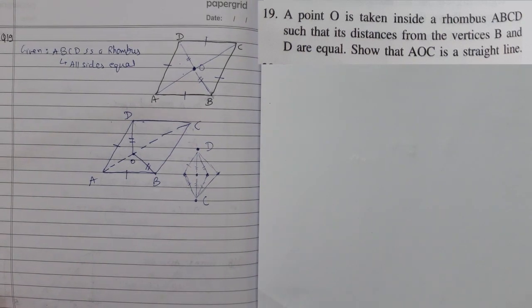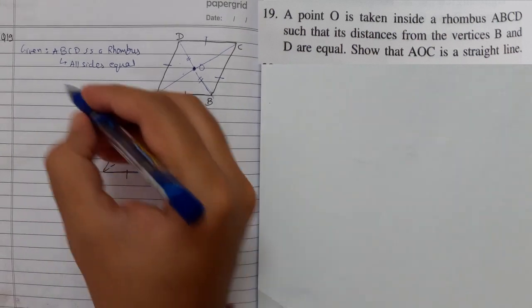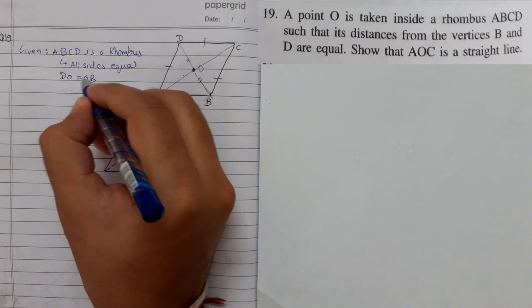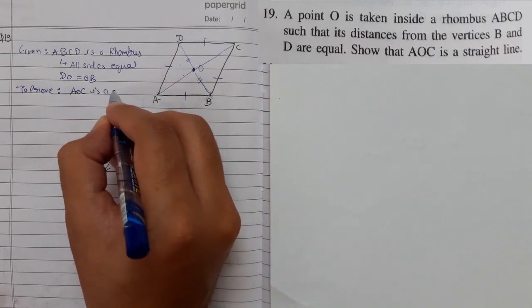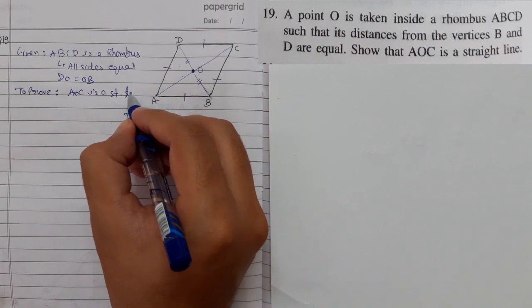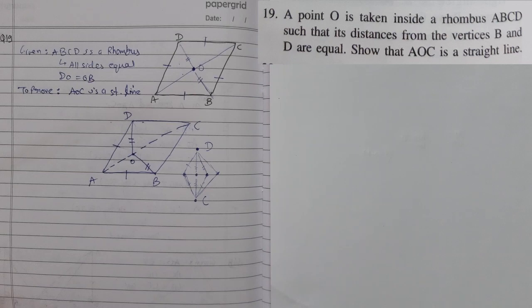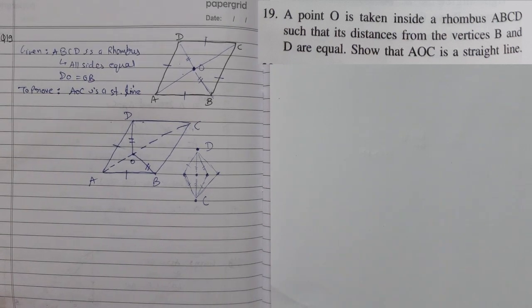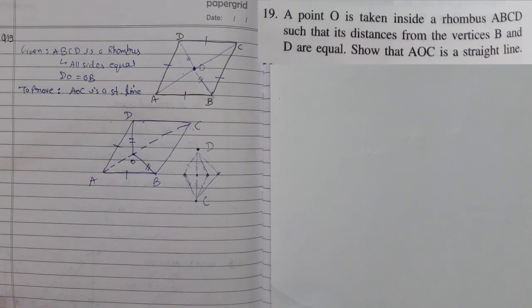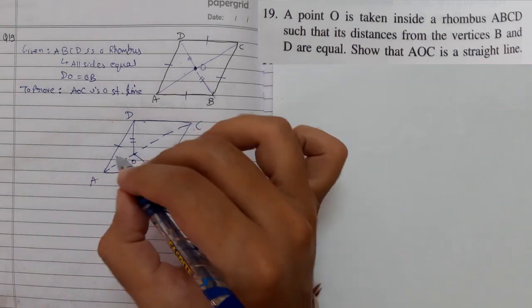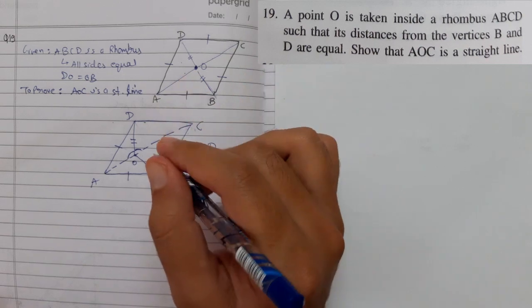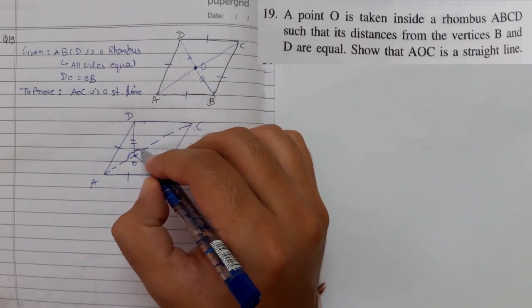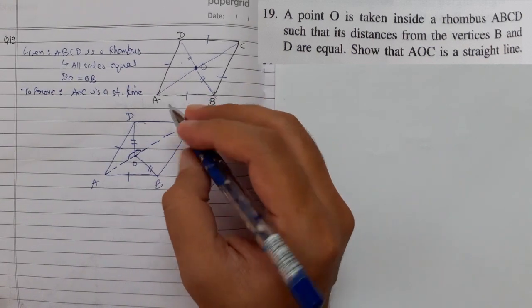And we need to prove that AOC is a straight line. So first of all we have to think that DO is equal to OB, and we need to prove that AOC is a straight line. How to prove that mathematically? One thing is we can see that it is a straight line. Obviously it is a straight line. But mathematically we need some equality, some already proven things. So remember this thing.